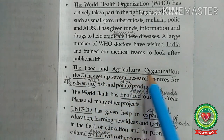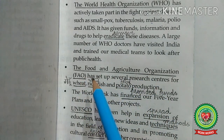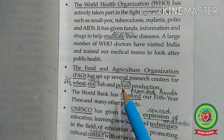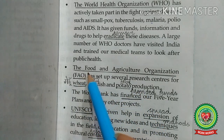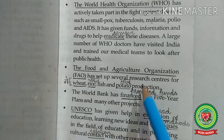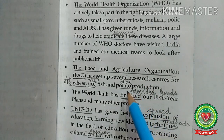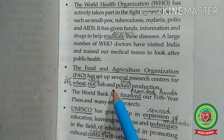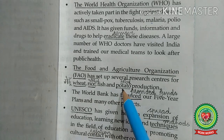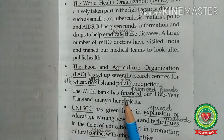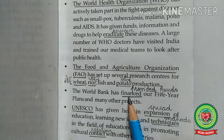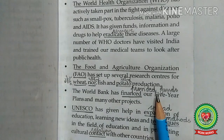The Food and Agriculture Organization — FAO — has set up several research centers for wheat, rice, fish, and potato production. The main aim of the FAO is to eradicate hunger, and this agency is supporting India in eradicating hunger. The World Bank has financed India's five-year plans and many other projects — financed meaning provided funds.